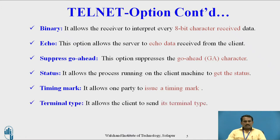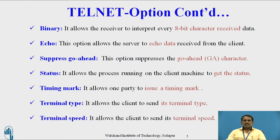Next is terminal timing mark. Before transmitting the data, the user should mark the timing — how much time it will take to reach the data to the destination. It allows one party to issue a timing mark. Next is terminal type — it allows the client to send its terminal type, whether the client is using Unix, DOS, or Linux operating system. Next is terminal speed — we check the speed of data before transmitting, and the server can wait only a limited amount of time for data to reach the destination.